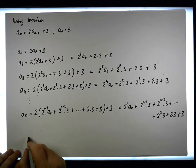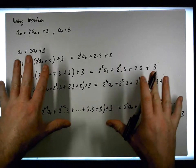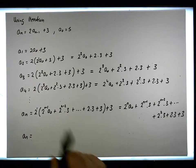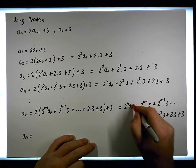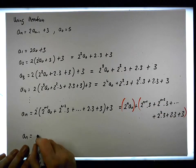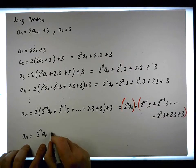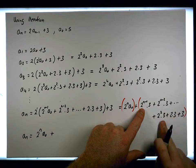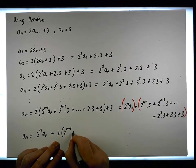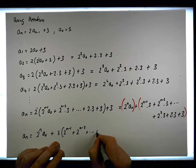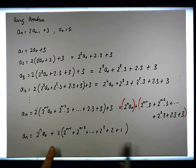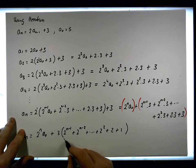This is a very complicated expression — there's a lot of work involved in iterating these types of recurrences. We're going to break it into two components: the first is 2^n times a_0, and the second has a factor of 3 times the sum 2^(n-1) plus 2^(n-2) plus all the way down to 2 squared plus 2 plus 1, which is effectively a geometric sequence.